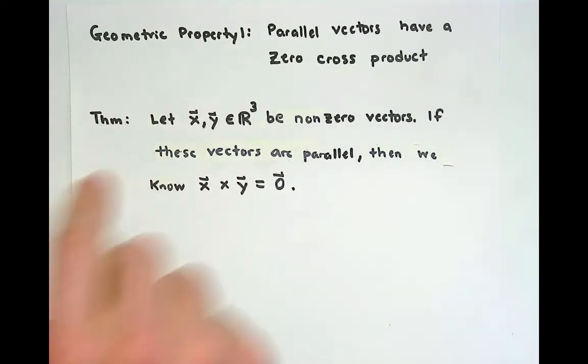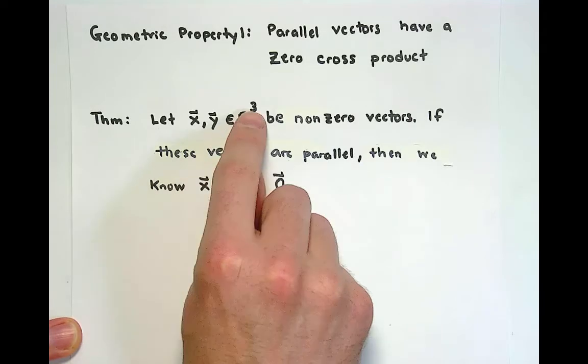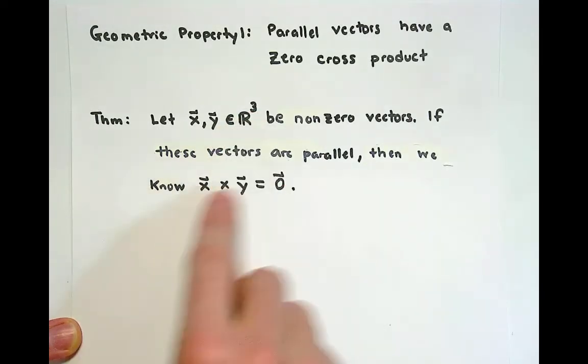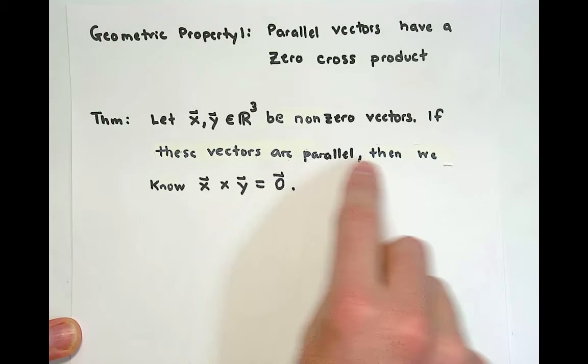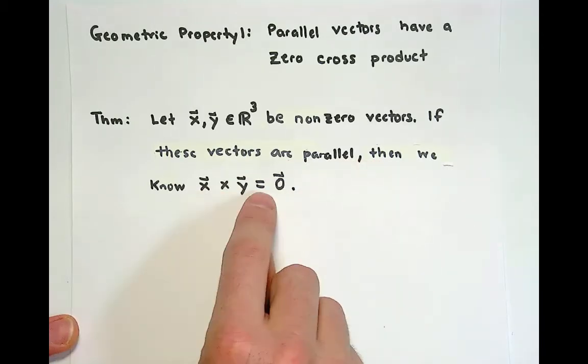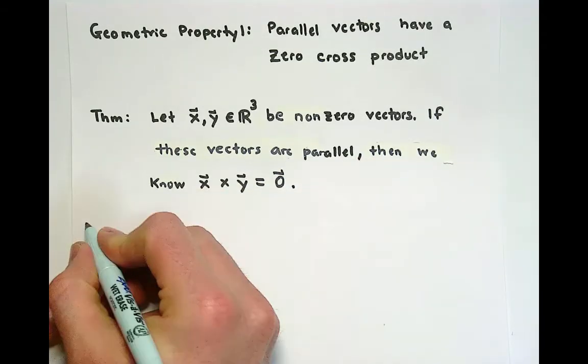The theorem statement goes like this. If you have two nonzero vectors in R³, and you know these vectors are parallel, you can immediately conclude that the cross product between the two of them is zero.